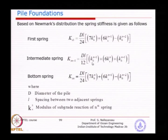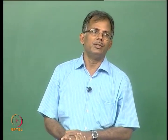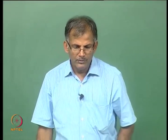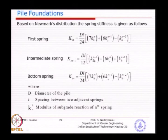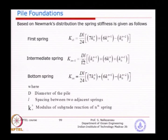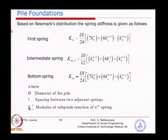The springs in the middle of the pile will be stronger than the springs at the top and bottom, which is a reasonable assumption. Even today we use this Newmark distribution method for many applications. In fact, many computer programs are written based on this type of approach. What we need to find out is the value of KH, the modulus of subgrade reaction.